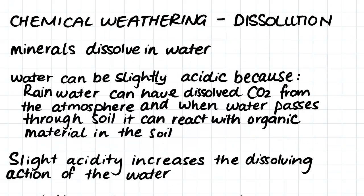Firstly, we are going to talk about dissolution. Dissolution occurs when minerals dissolve in water. The water that comes in contact with rocks can actually be slightly acidic. This happens because rainwater can have CO2 dissolved in it from the atmosphere, and when water passes through soil it can react with the organic material in the soil and become slightly acidic. This slight acidity increases the dissolving action of the water.